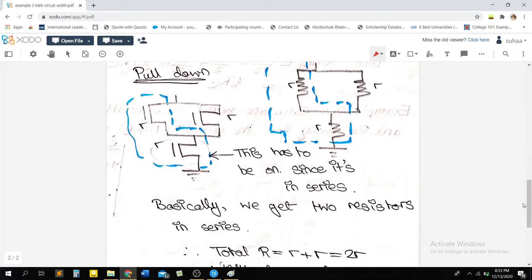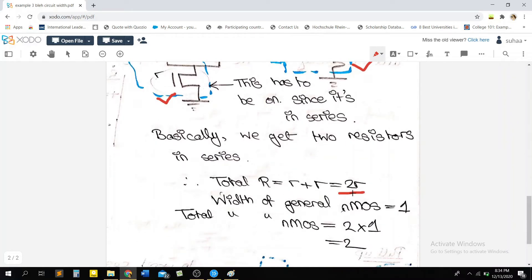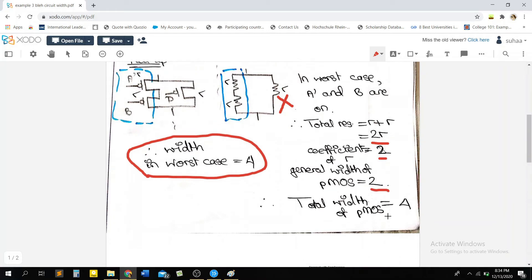Next for our pull-down circuit, we have our 3 NMOS connected in the reverse manner. So for the worst case scenario, for our maximum resistance, we can consider this NMOS to be on and this NMOS to be on and we can consider this one to be off. I could have also done it in the reverse way. This could have been on and this one could have been off. It's the same thing. So if one of the parallel NMOS is on and this series NMOS is on, we will get two resistors in series. And our resistance will again be 2R. And since the width of a general NMOS is 1, the total width of a single NMOS in this pull-down network will be equal to 2, whereas the width for the PMOS network was 4.